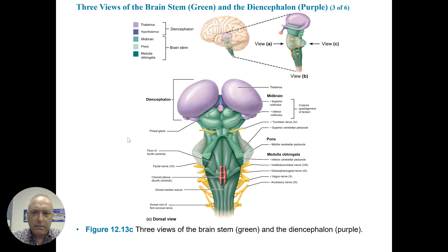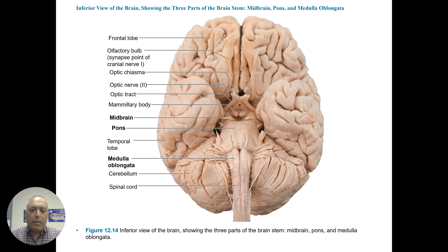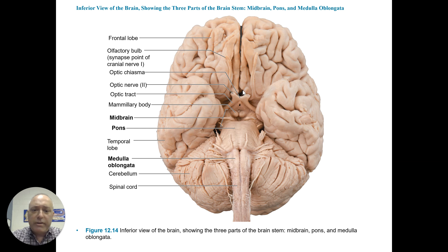Here's an actual brain — this is an inferior view, so from below. We can see a number of cranial nerves coming off. We've got the olfactory as the first cranial nerve, the most rostral or anterior portion of the brain. We've got the second, which is the optic nerve, and this just progresses.